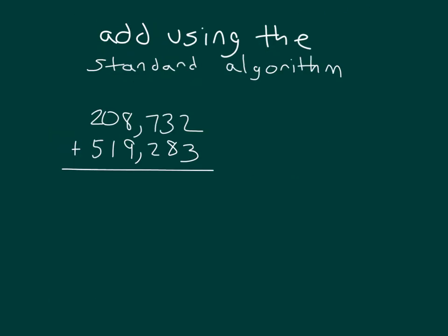In this problem, we're asked to add using the standard algorithm. So we do not need a place value chart. Let's draw a tape diagram, though, just to represent this problem. And then so we have that first number, two hundred eight thousand seven hundred thirty-two.